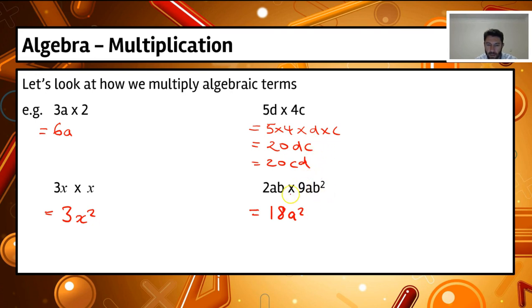And then we've got b times b squared. Now b squared times b, if we remember our indices, that's b to the power of 1. So b to the power of 1 times b to the power of 2 gives me b to the power of 3.